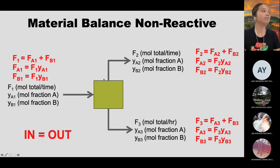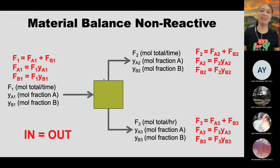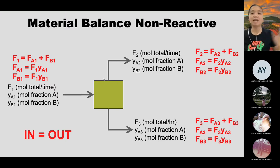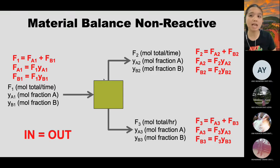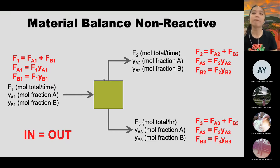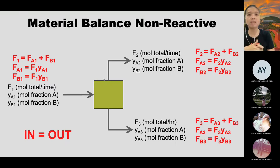For a separator example with non-reactive process: a separator just separates — it cannot achieve 100% separation. Most of the time you get 99% A at the top with 1% B, and 98% B at the bottom with 2% A. You need to understand the three key concepts: total molar flow rate, mole fraction (composition), and actual molar flow rate of each compound. Molar flow rate of compound = total molar flow rate × mole fraction.